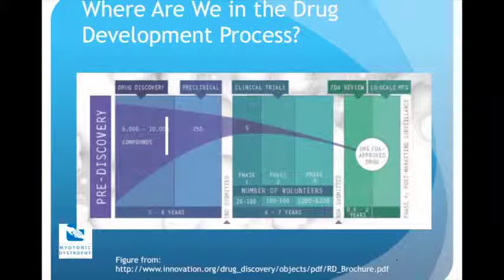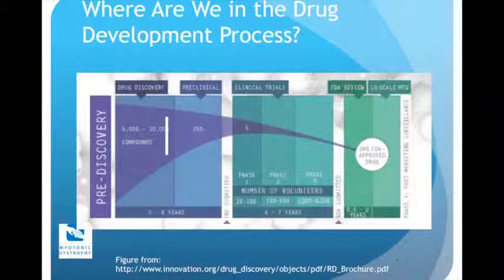Where are we in the drug development process? Making drugs is a long and arduous process. We have the first compounds capable of reversing DM2-associated defects in cells — we're at approximately the white bar in the drug discovery pipeline. We have a ways to go if our ultimate goal is FDA approval. But I think there are other advantages in this area that may accelerate the ability to get drugs to patients.